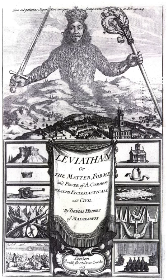Today the modern nation-state is the predominant form of state to which people are subject. Some states are sovereign, while some are subject to external sovereignty or hegemony where ultimate sovereignty lies in another state. The term state is also applied to federated states that are members of a federal union. Speakers of American English often use the terms state and government as synonyms, with both words referring to an organized political group that exercises authority over a particular territory.